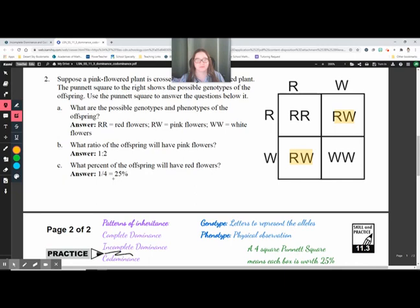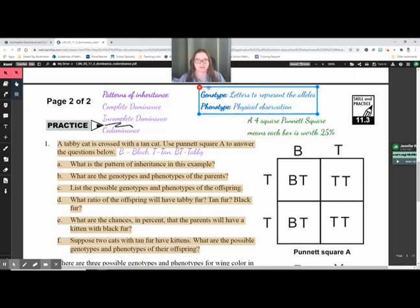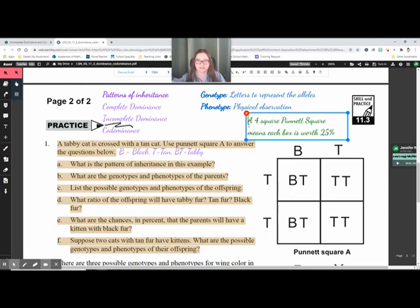That's 2 fourths. If I reduce 2 fourths, I get 1 half. The ratio is 1 to 2. Now what percentage of the offspring will have red flowers? Well, it's going to be just that one box worth. One box is 25% in a Punnett square. So 25%.